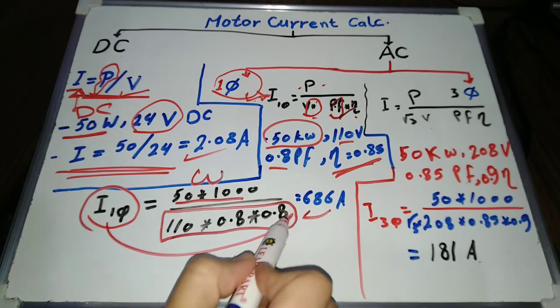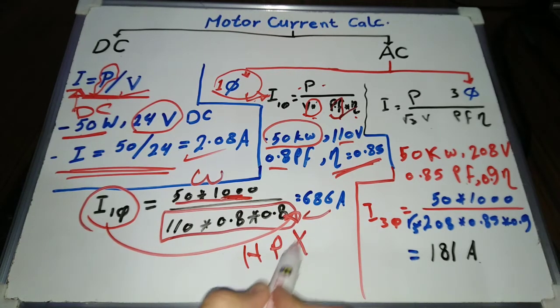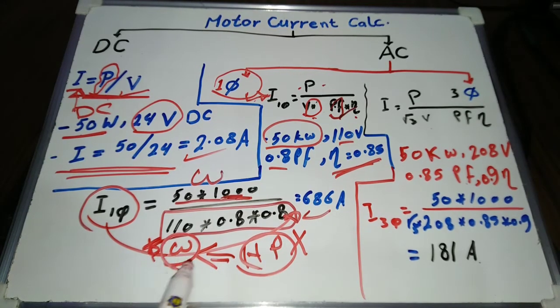Note that power in the equation is in watts, not in kilowatts or horsepower. If the motor power is in horsepower, you should convert it to watts before using it in the motor current formula. I have made a video about converting motor power from horsepower to watts. I will provide a link to it in the description.